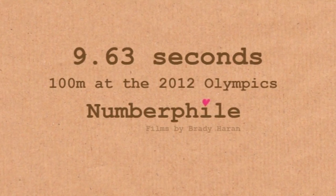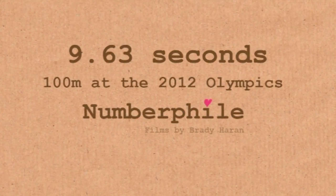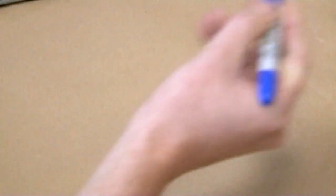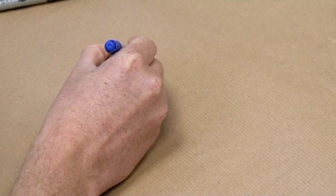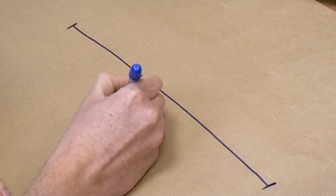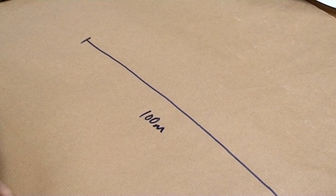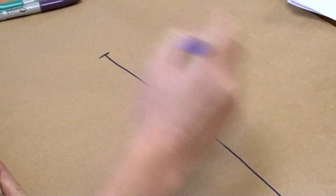All right, so do you want me to draw a picture of the race? Yeah. Okay, I'll do my best. Here we are in the Olympic Stadium in London. There's my racetrack. It's 100 metres long. The guys started down here, and then they legged it along the track.